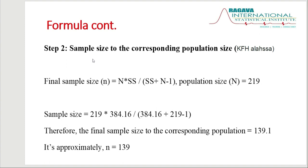Step two calculates the final sample size corresponding to the actual population size. The formula is: n = N × SS / (SS + N − 1), where N is the population size. For example, suppose the total number of medical records is 219. It is very difficult — and statistically unnecessary — to review all records, as it takes more time and more resources. So we calculate how many records to choose as a sample.